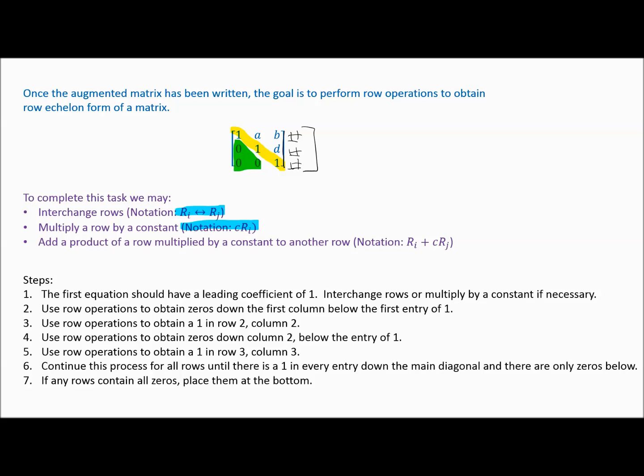The third operation is that you can add a multiple of one row to another row. So you can multiply a row by a constant and then add it to another row. The notation is R_i + c·R_j replacing R_i. To summarize the three allowed operations: interchange rows, multiply a row by a constant, and add a multiple of one row to another row.